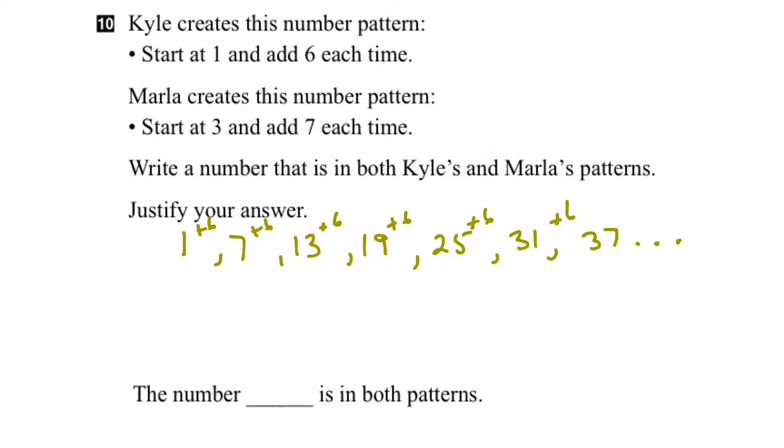Okay, let's look at Marla. So she's going to start at 3 and then she's going to add 7 each time. So the next number would be 10. Add another 7 would be 17. Add another 7 would be 24. Add another 7, she'd get 31. Add another 7, she'd get 38. Add another 7, she'd get 45, and so on.